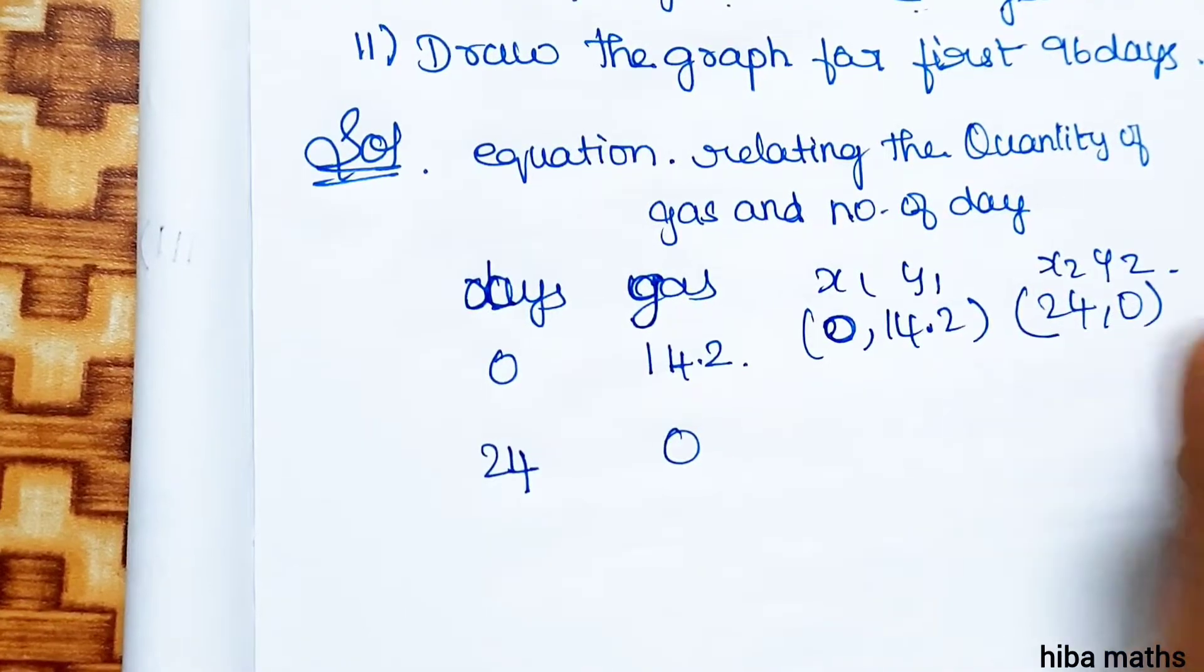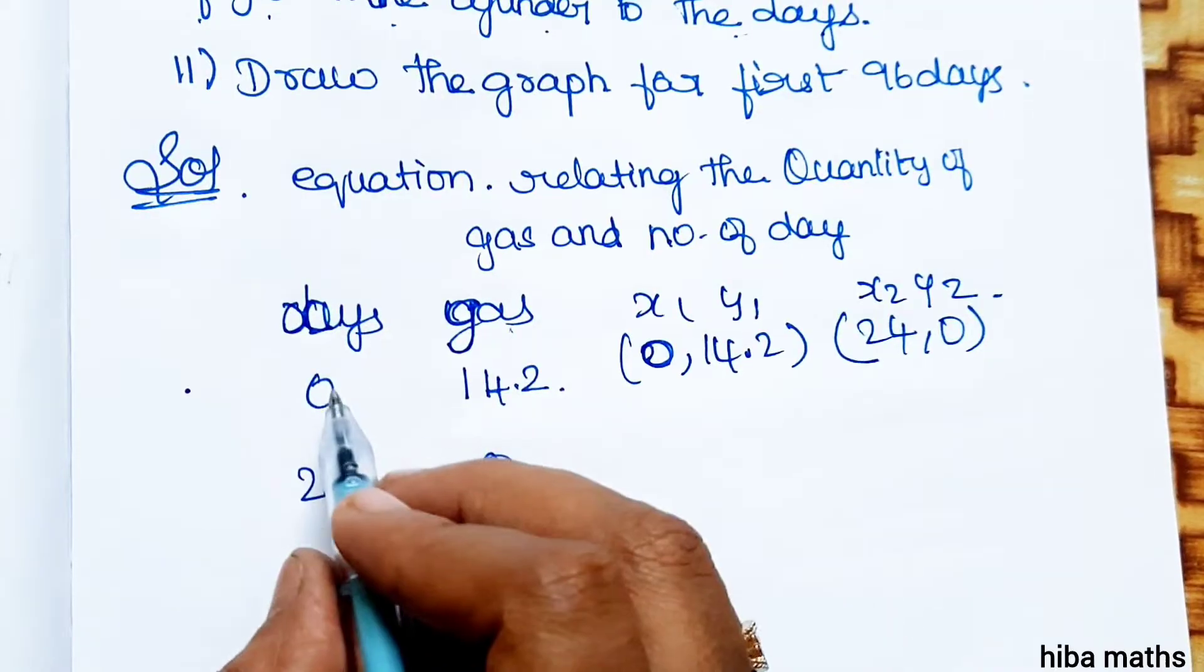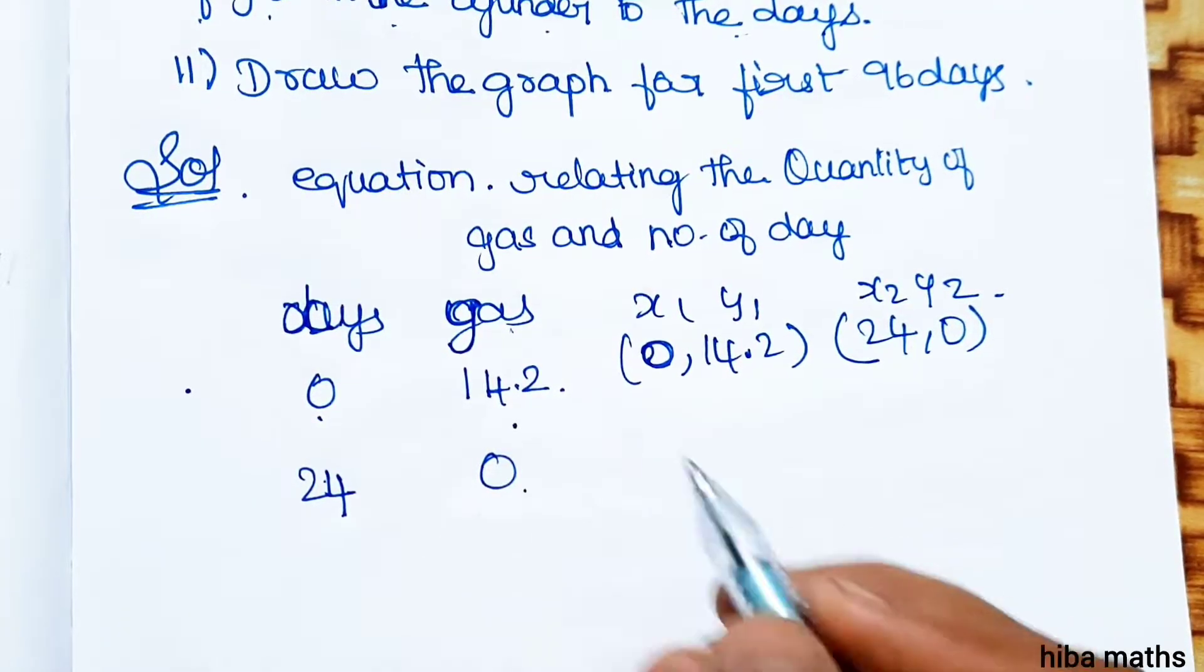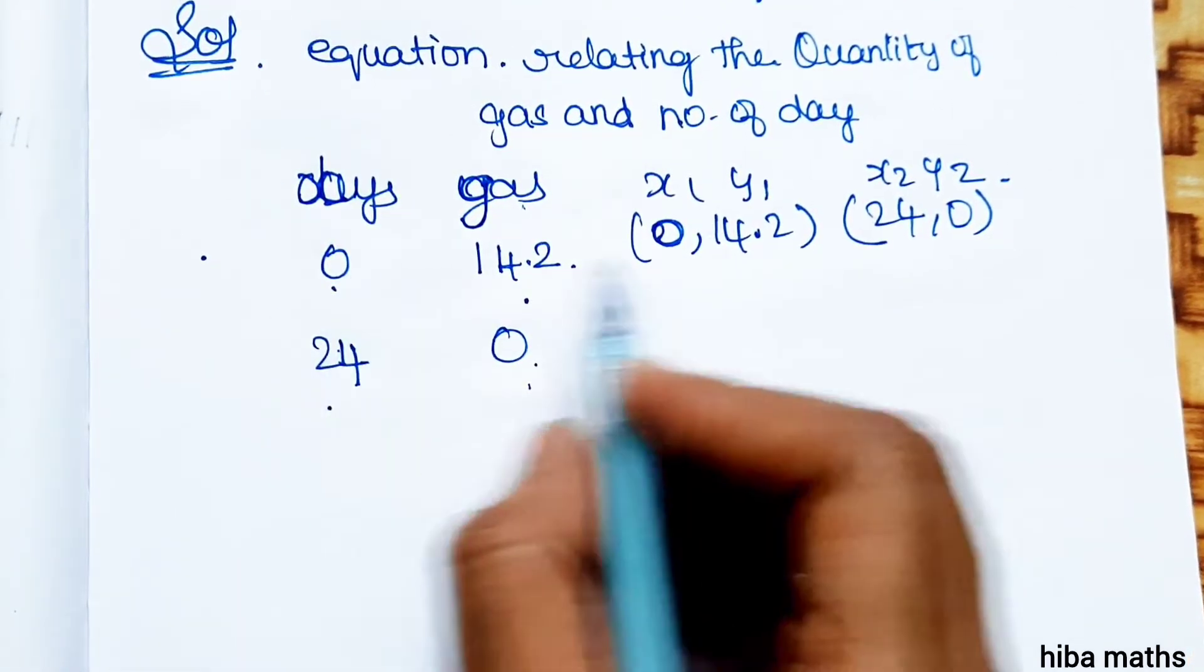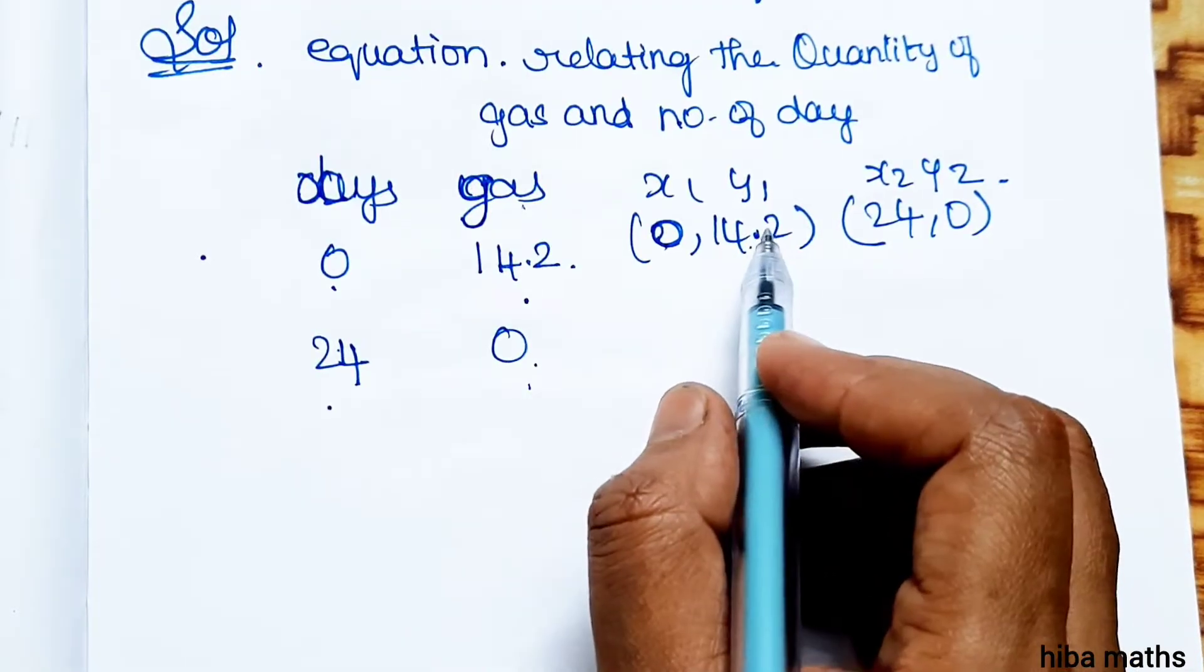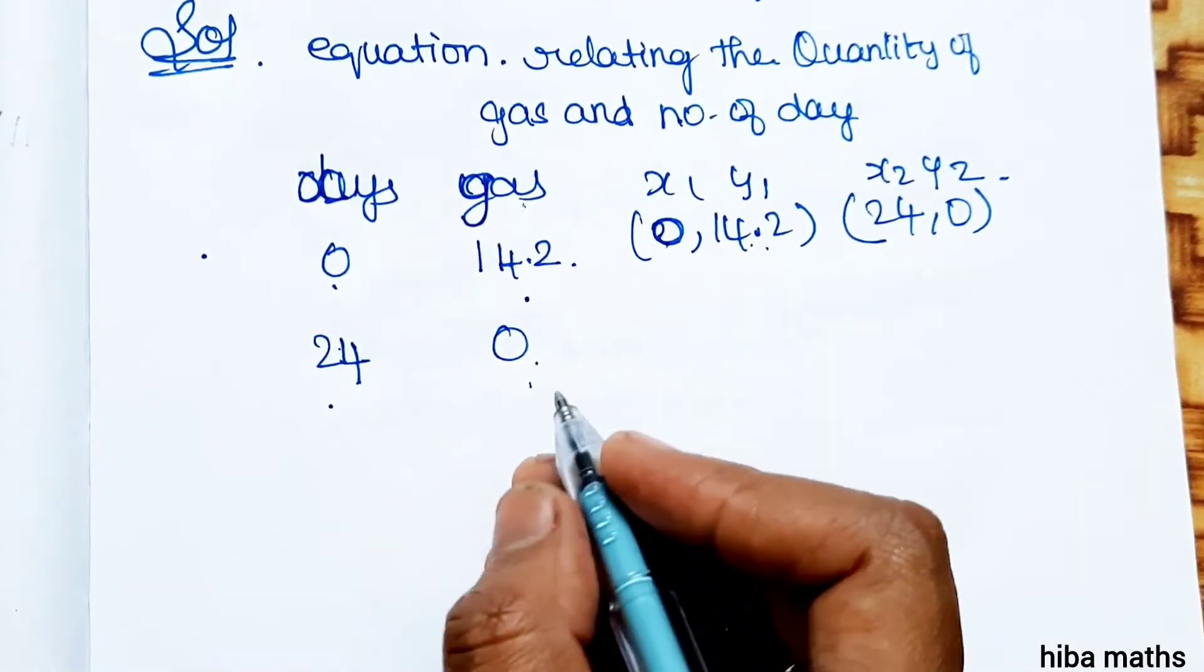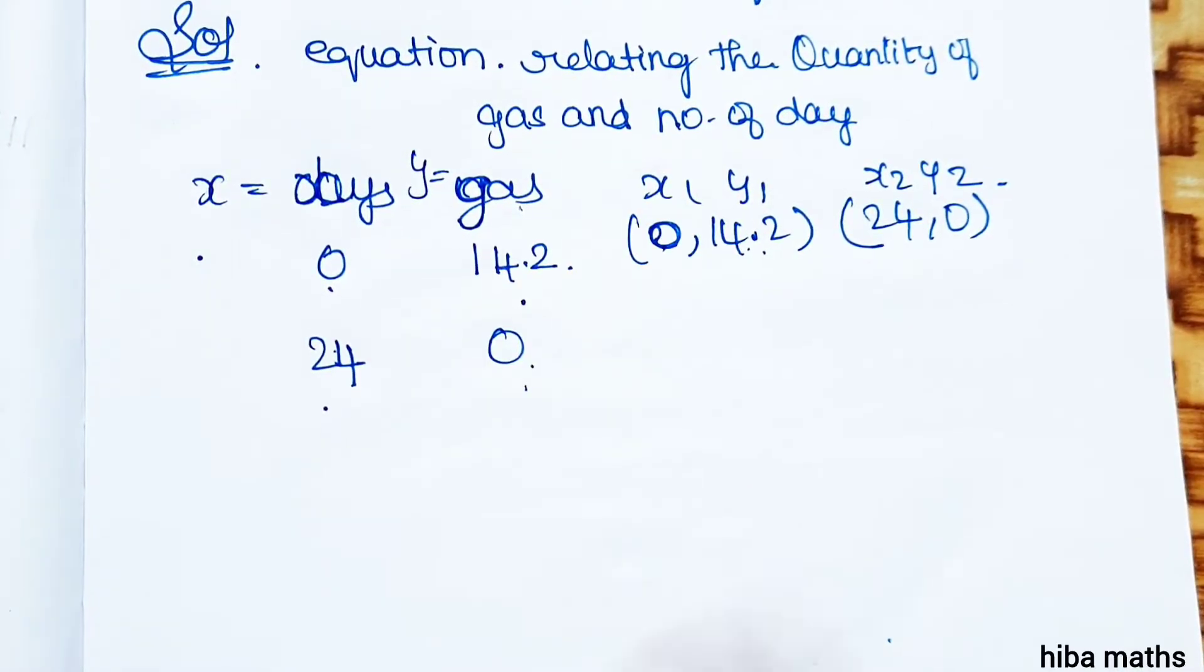Understand now, the endpoint: days 0, gas 14.2; days 24, gas 0. So x1, y1 and x2, y2. Where x equals days and y equals gas, understanding now?